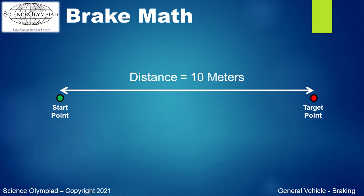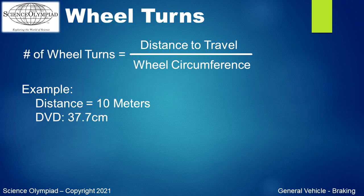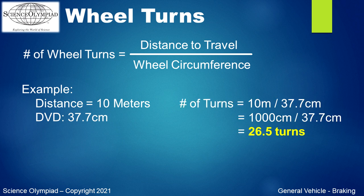Here is an example track that is 10 meters between the start point and the target point. We need to calculate how many wheel revolutions are required for 10 meters. This can be calculated by dividing the target distance by the wheel circumference. For our example, the 10-meter target distance is divided by the 37.7-centimeter circumference. Make sure to match units — in this case, we use 1,000 centimeters divided by 37.7 centimeters, which equals 26.5 turns.